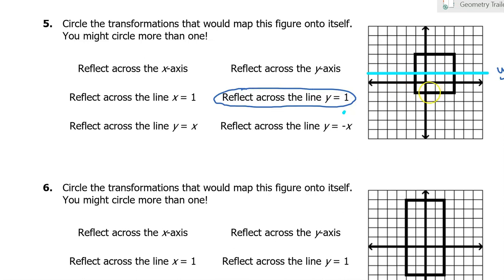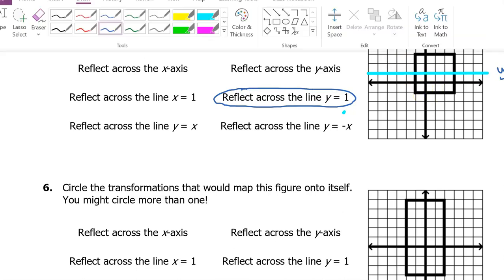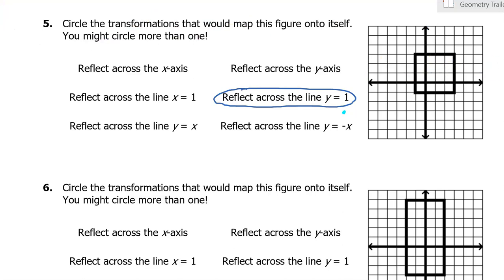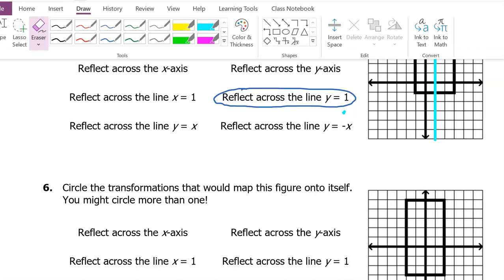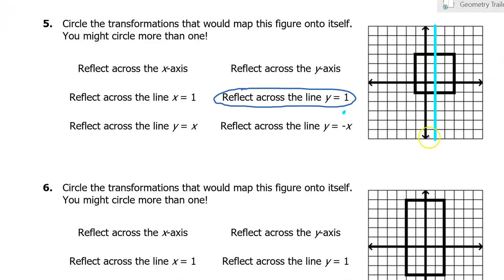That will map the figure back onto itself. Let's do another one. Similarly, we can do another line of symmetry vertically. Can you see that this line splits the square exactly in half? The left side is the mirror image of the right side. When you have a vertical line, vertical lines are of the form X equals something. So this is the line X equals one. So if you reflect across the line X equals one, that will map the figure back onto itself.